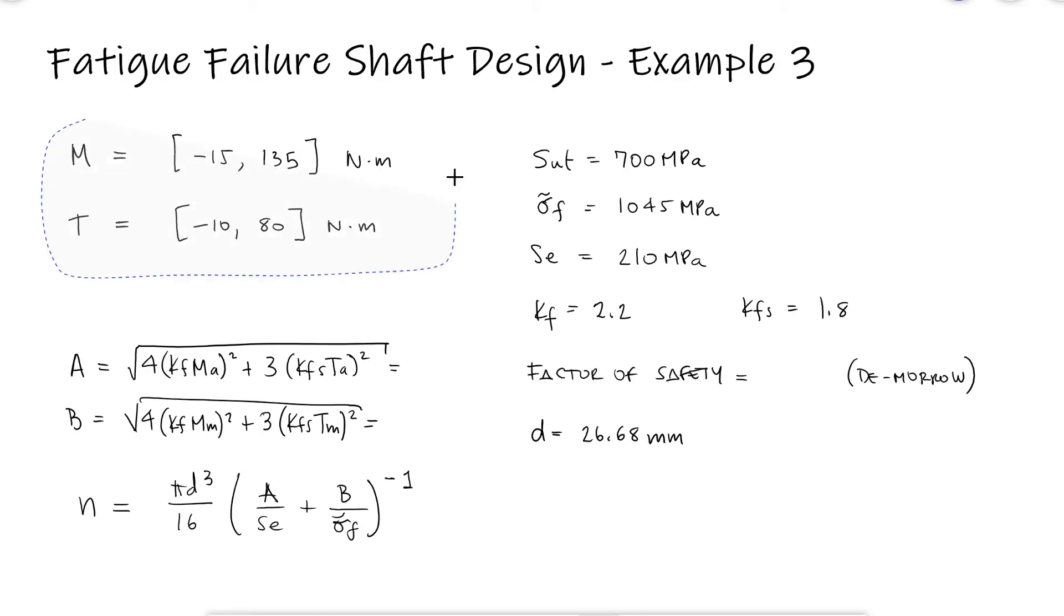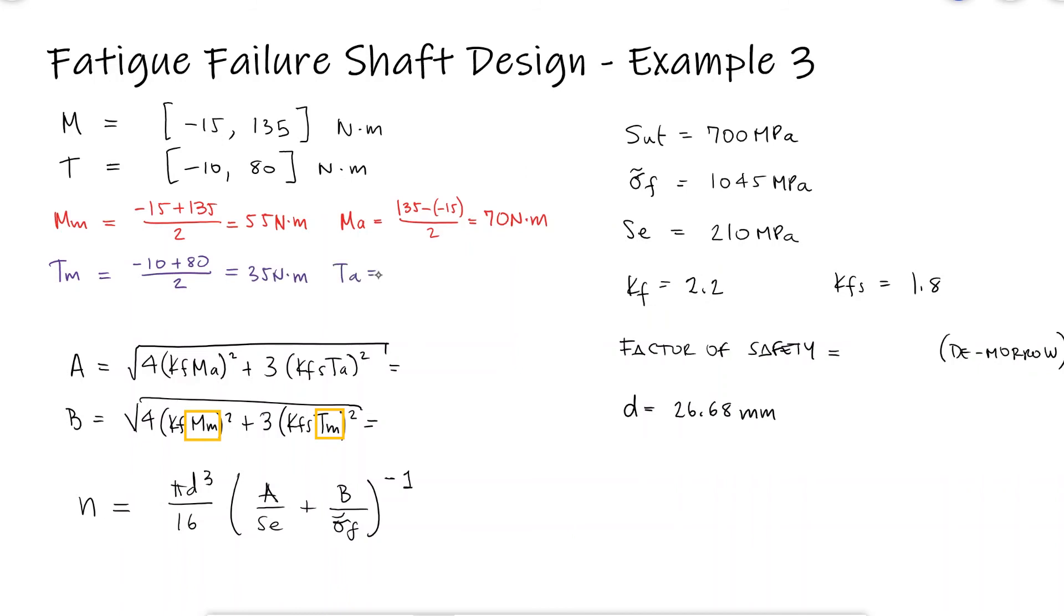For that, we need to first calculate the alternating moment and torque and the mean moment and torque. With these values and the fatigue stress concentration factors, we can calculate the values for A and B.